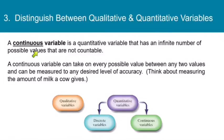On the other hand, a continuous variable is a quantitative variable that has an infinite number of possible values. So a continuous variable can take on every possible value between any two values and can be measured to any desired level of accuracy. Think about measuring the amount of milk a cow gives. So here's where we are. We have two different kinds of variables. We have qualitative and quantitative. Quantitative variables can be divided into two kinds. Either discrete, things that we count, 1, 2, 3, 4, or continuous, things that we measure.